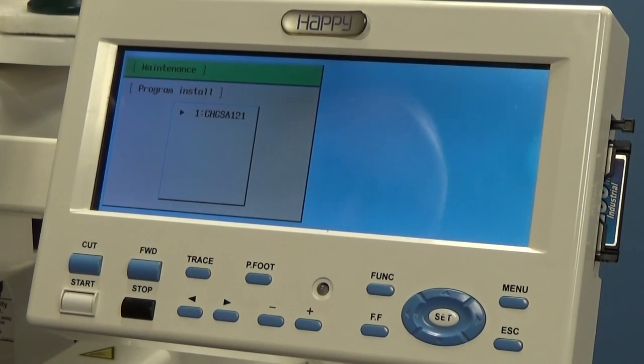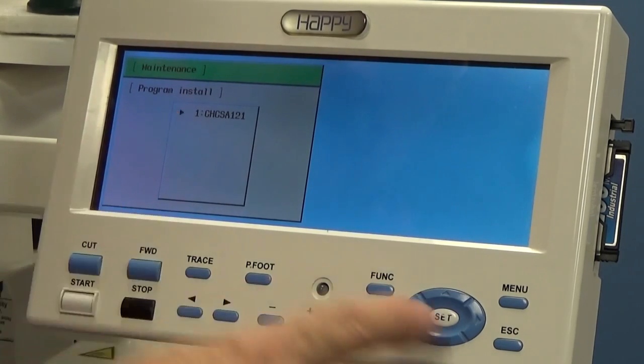It's going to search for the program. And here's our data. We're doing CHCSA121 this time. You may have 1.19 or 1 point whatever. 1.16 and up is compatible with 64-bit Windows 7 and 8. So let's choose this. We're going to press set.